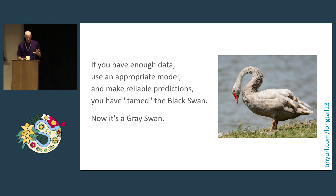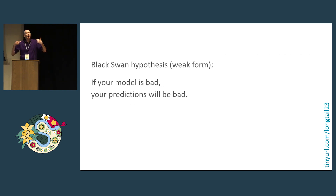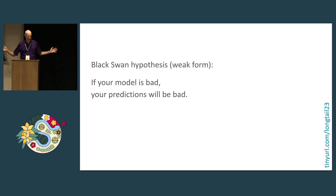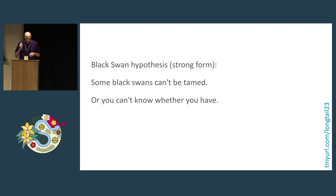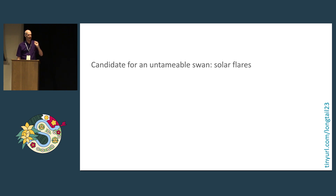I want to propose the black swan hypothesis in two forms. The weak form says that if you choose a bad model, your predictions will be bad — entirely unsurprising. If your model is bad, your predictions will be bad. The strong form is more interesting: some black swans cannot be tamed, or maybe you just can't know whether you have tamed them or not. I'm going to give an example — solar flares. I think these are a good candidate for untamable black swans.